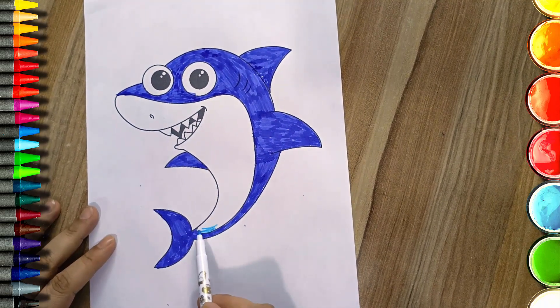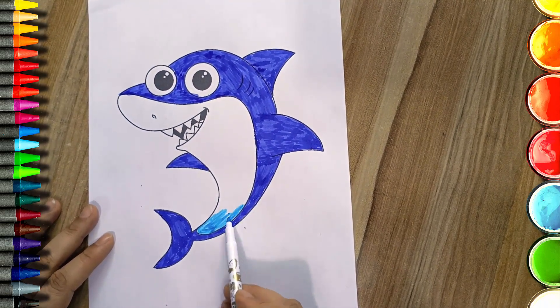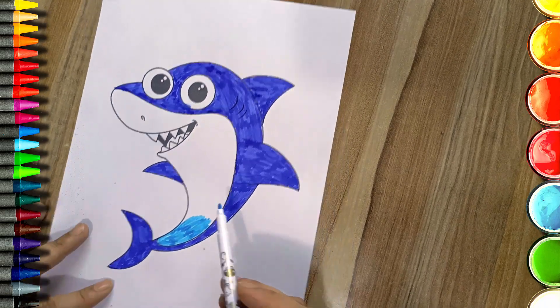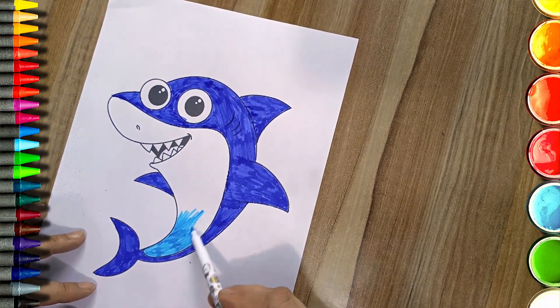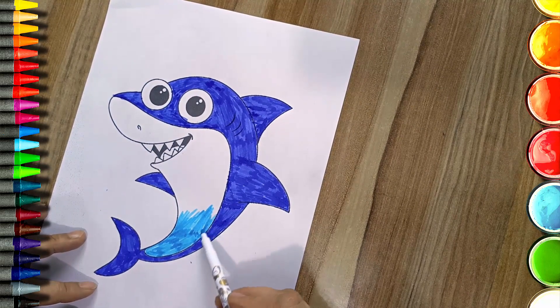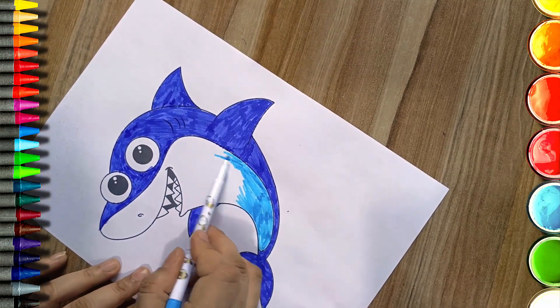Let's move to the underside of the shark. Using a lighter shade of blue, capture the gentle waves that dance beneath the surface. Allow your strokes to flow gracefully, imitating the tranquil waters where our shark calls home.